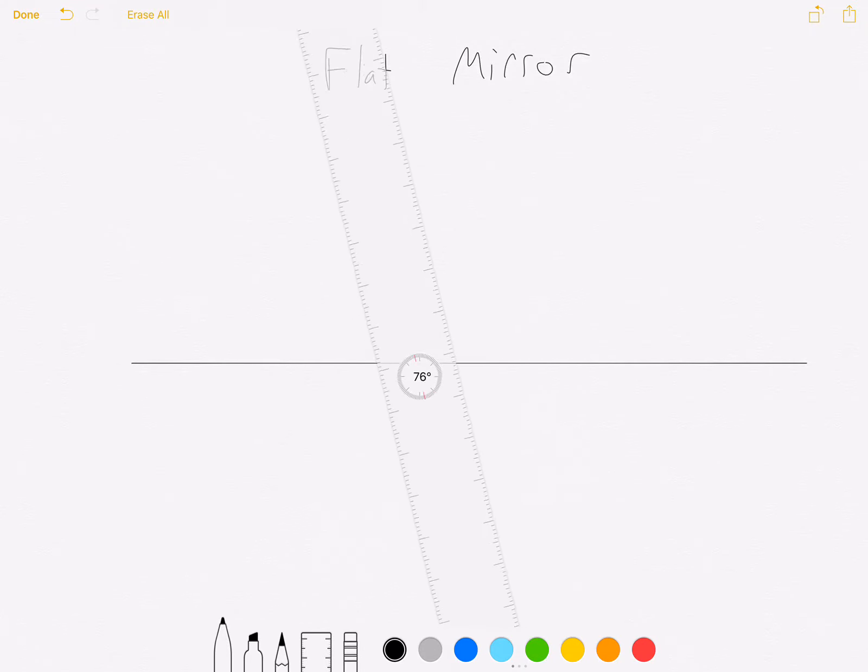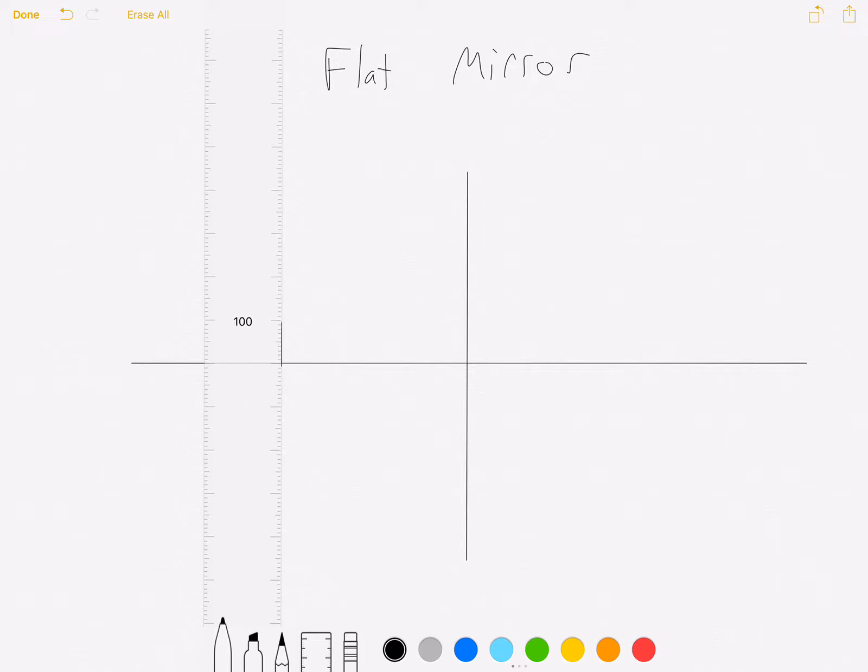With all ray diagrams, you generally start by drawing your principal axis, which is just a horizontal line, and the location of your mirror. So I'm going to draw my mirror just like so, and I'm going to draw an object three units tall in front of the mirror, and we're going to determine where the image is going to form.